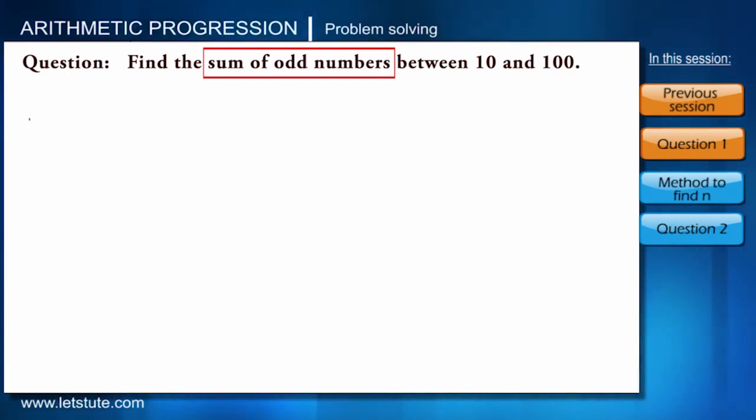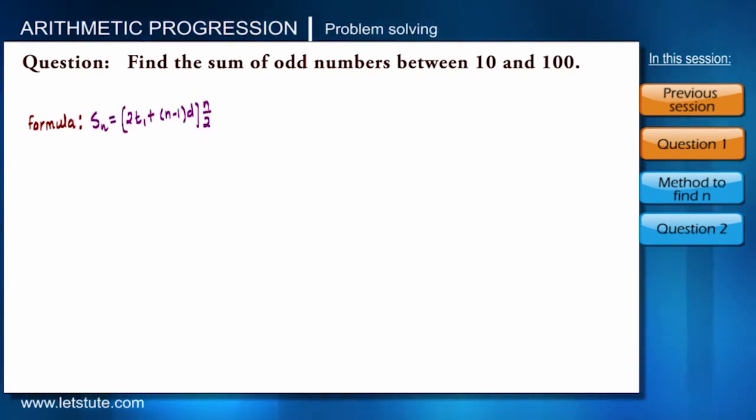We have to find sum of the odd numbers, so which formula will we be using? Yes, you are right, we will use SN. And for calculating SN we need T1, N, and D. We will calculate these parameters one by one.